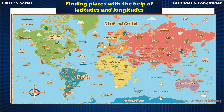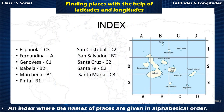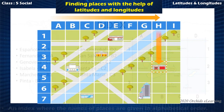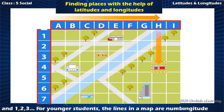Finding places with the help of latitudes and longitudes. You have learnt earlier how to find places on a map. For this you need a grid of numbered lines on each map, and an index where the names of places are given in alphabetical order. The index tells you the number of the square or rectangle in which a place is. In an atlas for younger students, the lines in a map are numbered A, B, C and so on, and 1, 2, 3 and so on. However, in most maps, the lines of latitude and longitude form the grid.